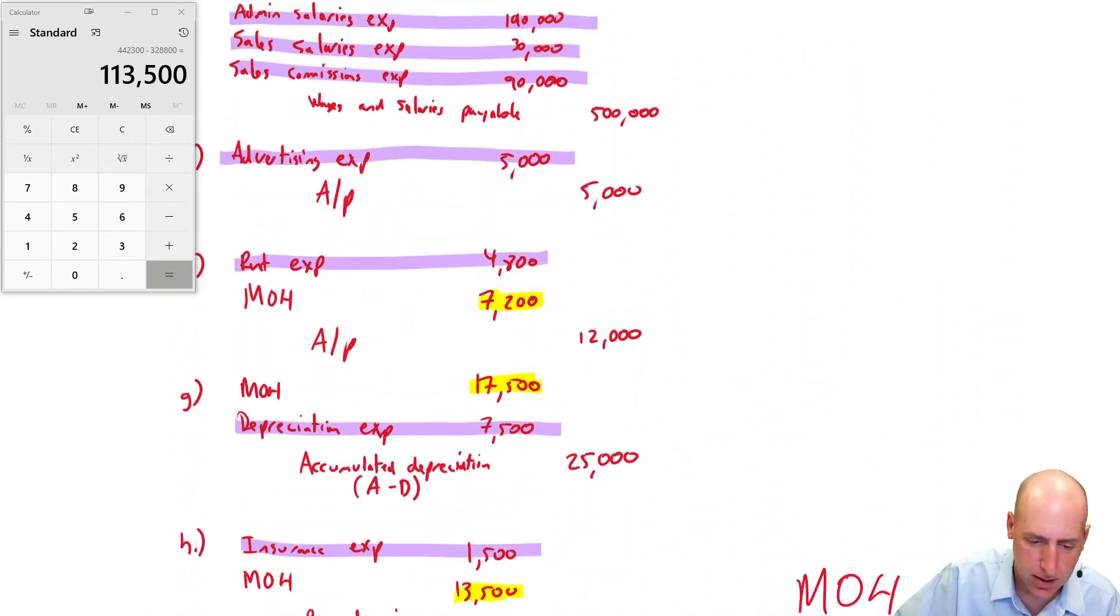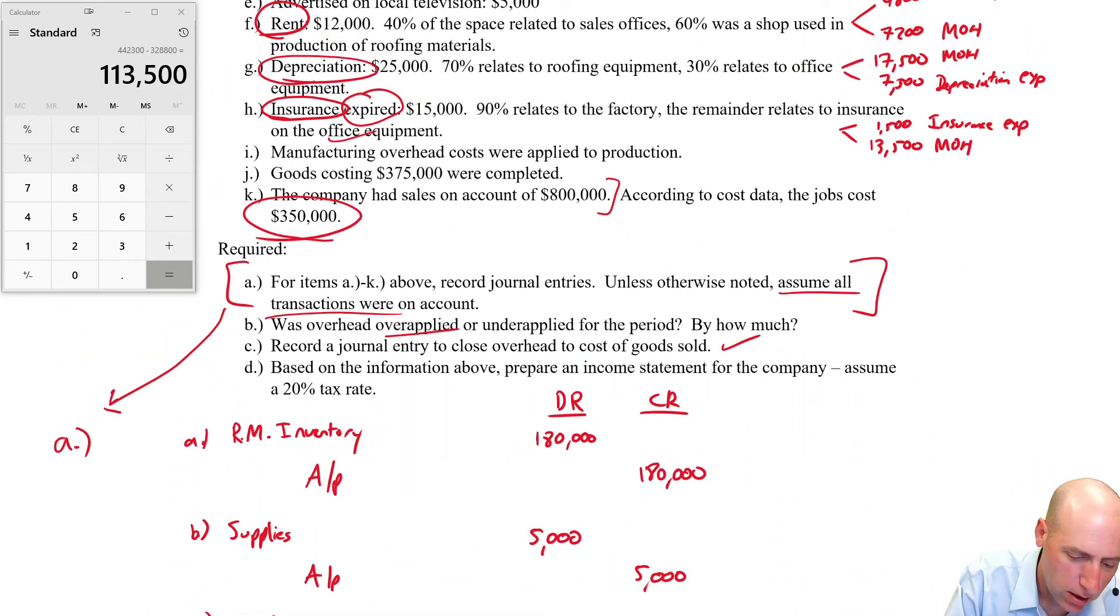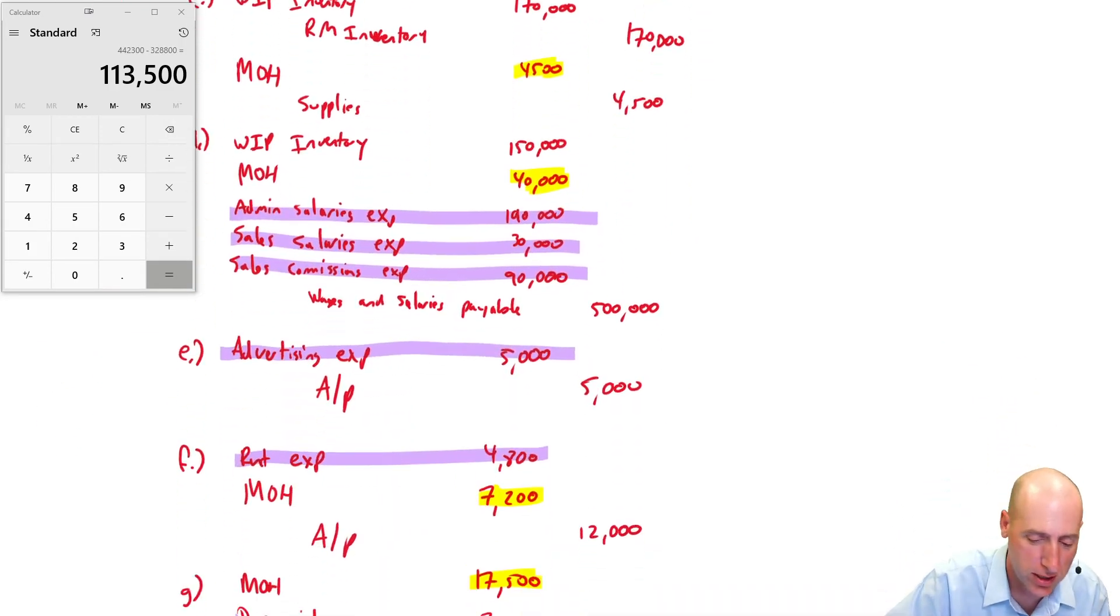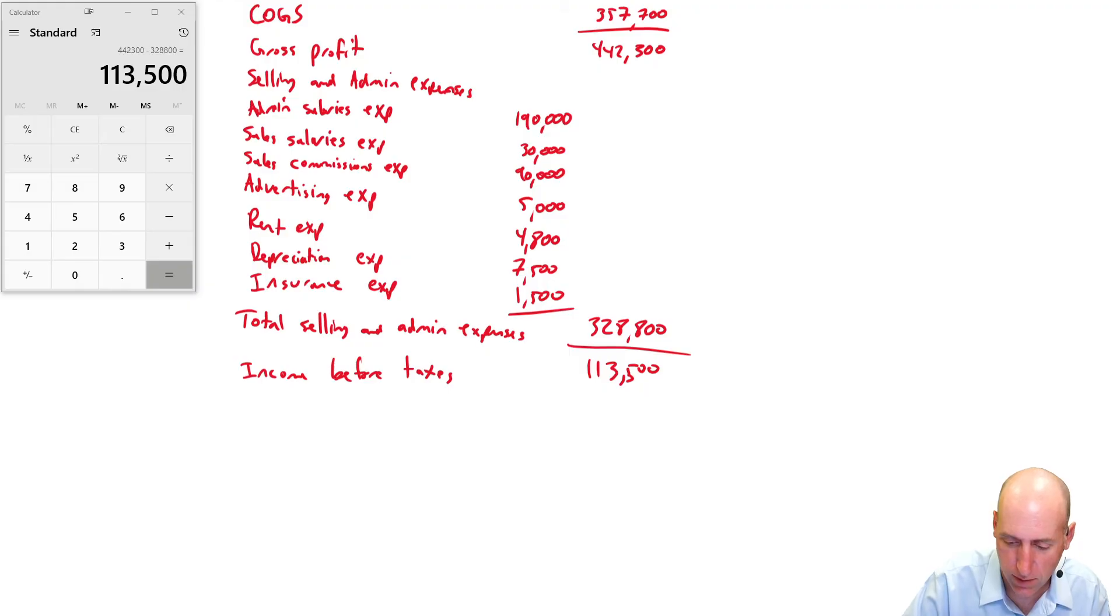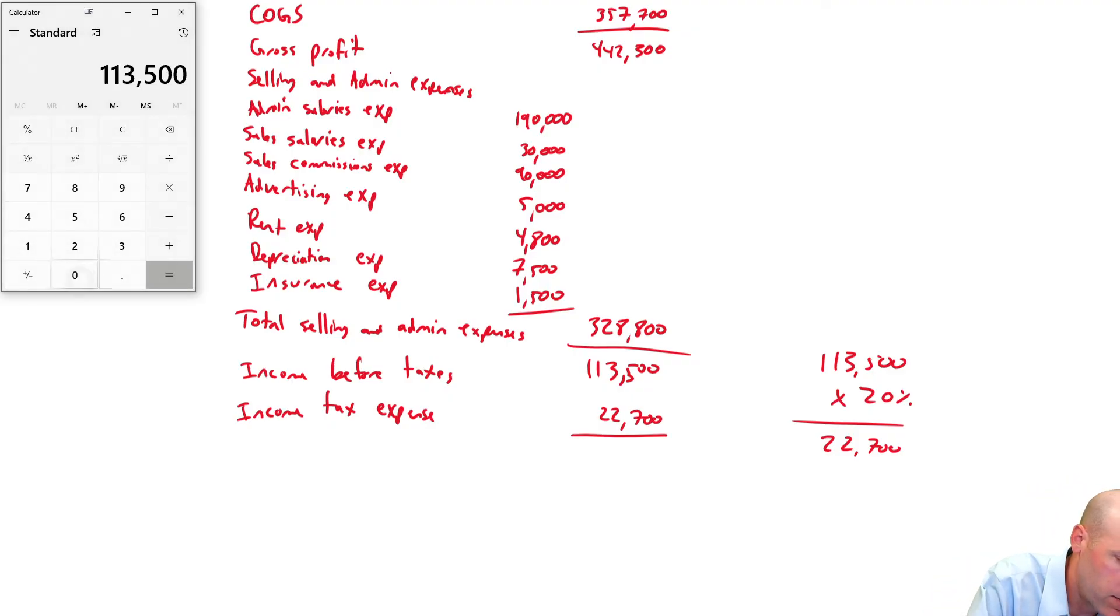Now we'll generally have income taxes. It says, based on the information about preparing income statement for the company, assume a 20% tax rate. That's 20% of income before tax. So I just take that income before tax number, $113,500 over here. I multiply by 20%. This isn't actually on the income statement. I'm just doing it on the side of the page. $113,500 times 0.2 is $22,700. That's my income tax expense. $113,500 minus $22,700 gives me $90,800. That is my net income.